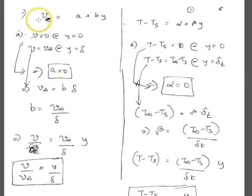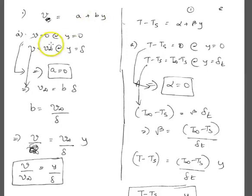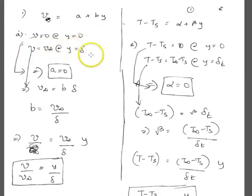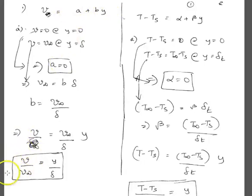You assume the linear profile for velocity. As you can see, there are two constants A and B — you need two boundary conditions. The boundary conditions are v equal to 0 at y equal to 0, and the velocity reaches the free stream velocity at y equal to delta. Using these two boundary conditions to evaluate the constants A and B, the expression you get is: v over v-infinity equals y over delta, where delta is your boundary layer thickness.